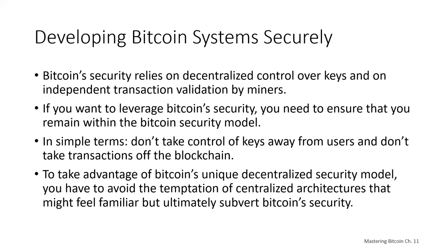So how do we develop Bitcoin systems securely? The most important principle for Bitcoin developers is decentralization. Most developers, however, have been writing centralized security programs in the past and might try to apply centralized security models to their Bitcoin applications with unfortunate results. Bitcoin's security relies on decentralized control over the keys and on independent transaction validation by the miners. If you want to leverage Bitcoin security, you need to ensure that you remain within the Bitcoin security model. In simple terms, don't take control of keys away from the users and don't take transactions off the blockchain.